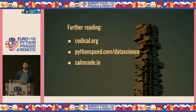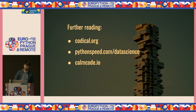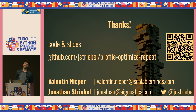Some useful resources: Jonathan's blog, pythonspeed.com, which has a great overview of data science profiling and speedup techniques, and calmcode.io for an overview of different libraries including Numba and profilers like pyinstrument. You can find our code and slides on GitHub — the QR code is on the slide. We'd be happy to take a selfie with you and look forward to your questions. Thank you very much.